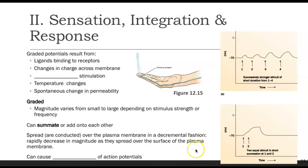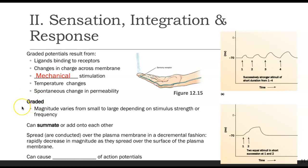Now we're going to start talking about some of the physiology that takes place regarding those pathways. The first thing we need to discuss are graded potentials. These result from ligands binding to receptors — ligands can be things like neurotransmitters. They can also be due to changes in charge across membranes, through mechanical stimulation such as vibration or pressure, temperature changes like hot water on our hand, or spontaneous changes in permeability. The term 'graded' means that the magnitude is going to vary from small to large, depending on the stimulus strength or frequency.